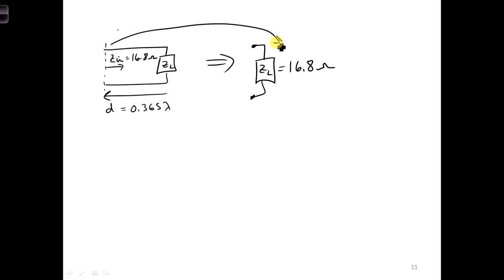So now that ZL, our new ZL here, is a real number, we can consider special distances where either the cosine or the sine terms go to zero for our input impedance.